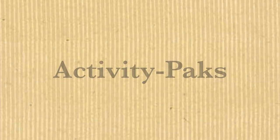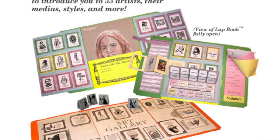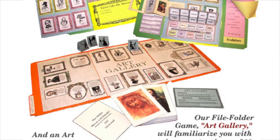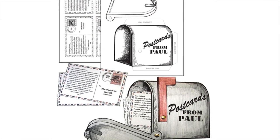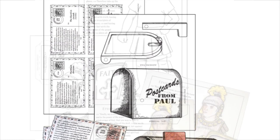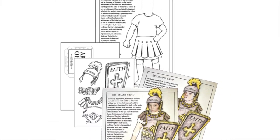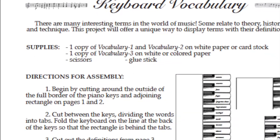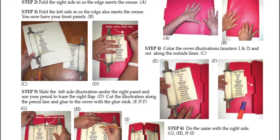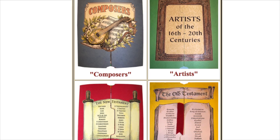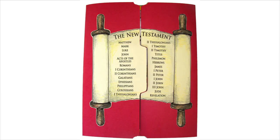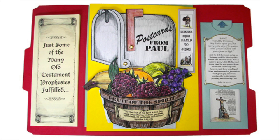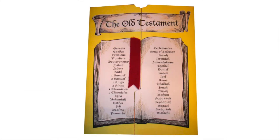Activity packs. An activity pack contains projects on a topic for one complete lap book and one or two other accompanying activities. Each activity pack comes with all of the printable masters needed to complete each activity, step-by-step directions for each project, and instructions and photos for the assembly of the lap book. Activity packs cover several topics, from composers to the Old Testament. Although text is sometimes included in the individual projects, lesson text is not provided.